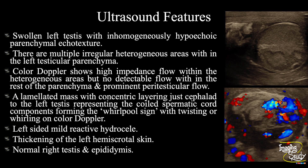In summary: a swollen left testis with inhomogeneously hypoechoic parenchyma is seen, with multiple irregular heterogeneous areas within. Color Doppler shows high impedance flow within the heterogeneous areas but no detectable flow within the rest of the parenchyma, and prominent peritesticular flow. A lamellated mass with concentric layering just cephalad to the left testis represents the coiled spermatic cord components forming the whirlpool sign with twisting on color Doppler. There is also left-sided mild reactionary hydrocele and thickening of the left hemiscrotal skin. The right testis and epididymis show normal sonographic features. These features conclude this as a case of left-sided late sub-acute testicular torsion.